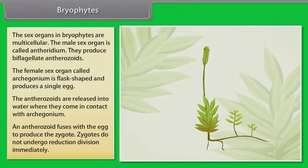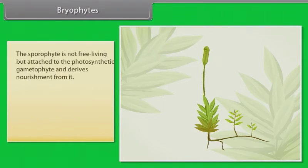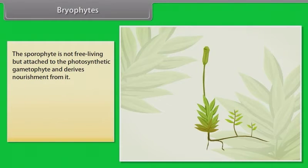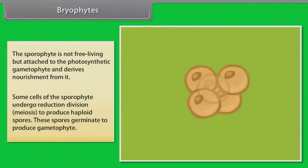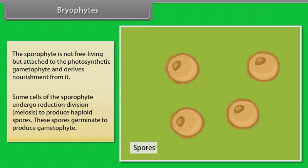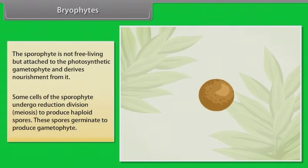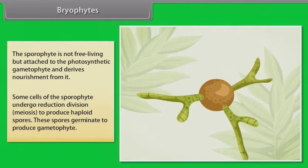An antherozoid fuses with the egg to produce the zygote. Zygotes do not undergo reduction division immediately. This sporophyte is not free living but attached to the photosynthetic gametophyte and derives nourishment from it. Some cells of this sporophyte undergo reduction division, meiosis, to produce haploid spores. These spores germinate to produce gametophyte.